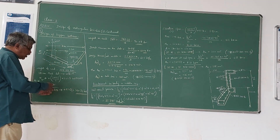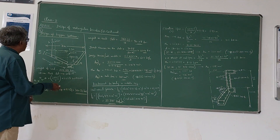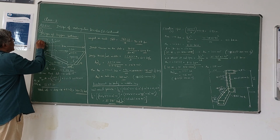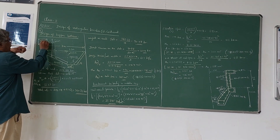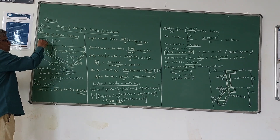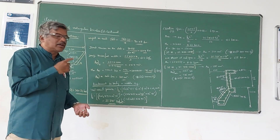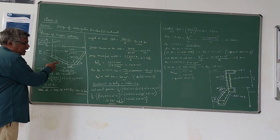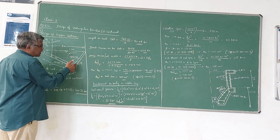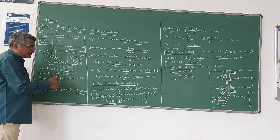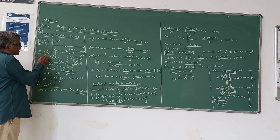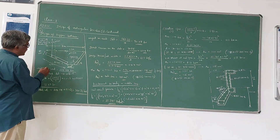There will be 4 upper bottom slabs. In plan, if you see it will be like this — there will be an opening at the center, and 4 slabs arranged around it. These are the upper bottom slabs. I have taken one slab here, and another slab like this. It makes an angle of 45 degrees, and let me assume the thickness of this slab is along that angle. The dimensions are like this.